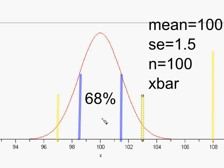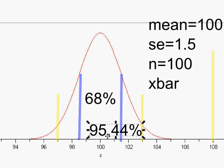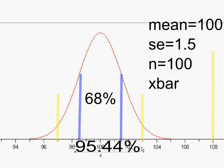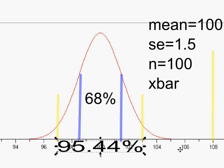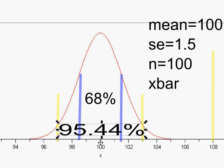What percent of the time should a sample mean be within two standard errors of the mean? About 95.44 percent of the time, the sample mean should be within two standard errors when using a normal distribution. So if more than 95 percent of the time a sample mean should be between 97 and 103, why is our sample mean way over at 108?